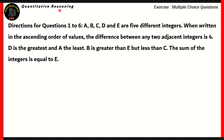It's again from quantitative reasoning. Directions for questions 1 to 6: A, B, C, D, and E are five different integers. When written in the ascending order of values, the difference between any two adjacent integers is 4. D is the greatest and A is the least. B is greater than E but less than C. The sum of the integers is equal to E.